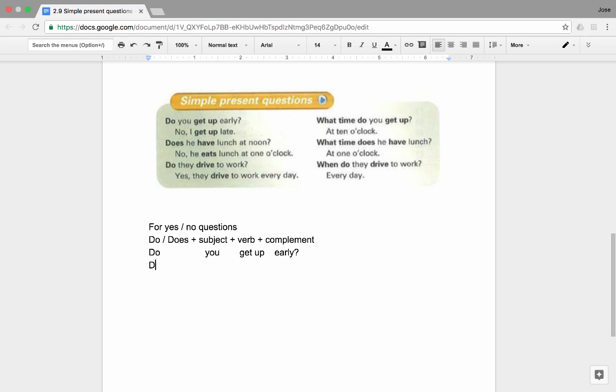And of course we need to add a question mark at the end. The next question. Does is the auxiliary verb. He is the subject. Have is the verb. Lunch at noon is the complement. Of course we need to add a question mark at the end.